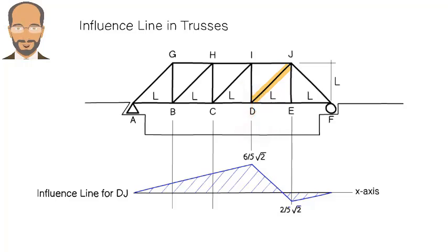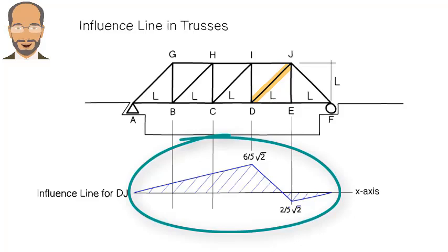In addition, an influence line gives us a visual tool to better understand the effect of a moving load on the member. For example, using this diagram we can easily determine the exact location of the moving load that makes DJ a zero force member. See if you can figure it out on your own.